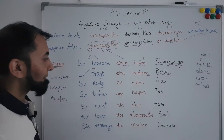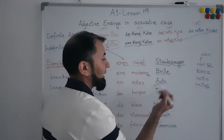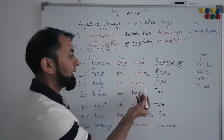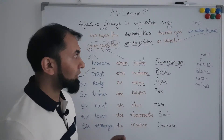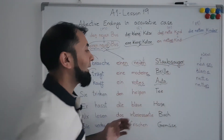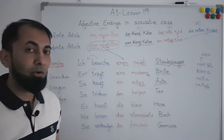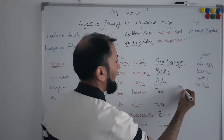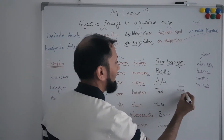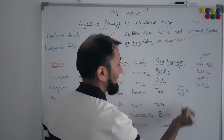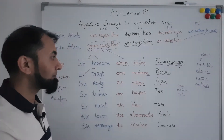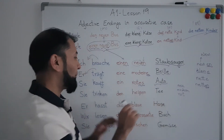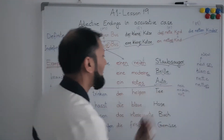The next example is 'Sie kauft ein rotes Auto' — she buys a red car. 'Kaufen' is a verb meaning 'to buy'. We need to determine the gender of 'Auto' — it is a neuter noun. So we refer to the neuter section of the table with indefinite article, which says we add '-es' at the end of the adjective. 'Rot', meaning 'red', becomes 'rotes'. Colors can also be used as adjectives.